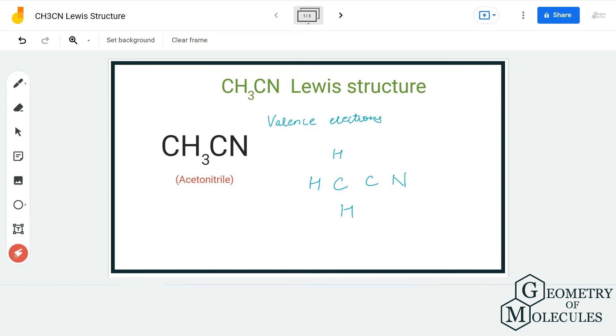Hi guys, welcome back to our channel. In today's video we are going to help you with CH3CN Lewis structure. It is a chemical formula for acetonitrile, and to find out its Lewis structure we will first look at the total number of valence electrons for this molecule.